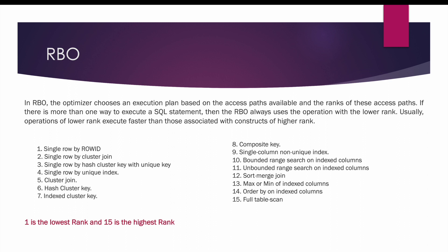So what exactly happens in RBO? In RBO, the optimizer chooses an execution plan based on the access paths available and the ranks of these access paths. There are 15 different access paths available in the RBO and each access path has a rank associated with it.